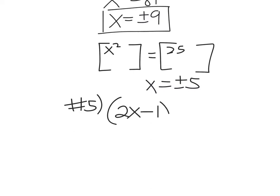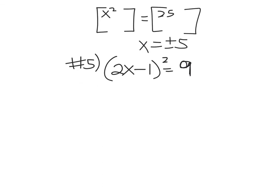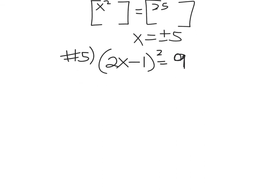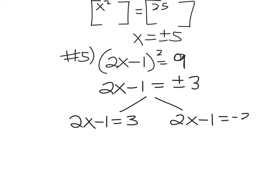2x minus 1 squared equals 9. A little bit more complicated. Same idea, though. You have a squared on the left side. So let's go ahead and take the plus and minus square root and get rid of that squared. So we have 2x minus 1 equals plus or minus 3. And now we have two equations to set up and solve.